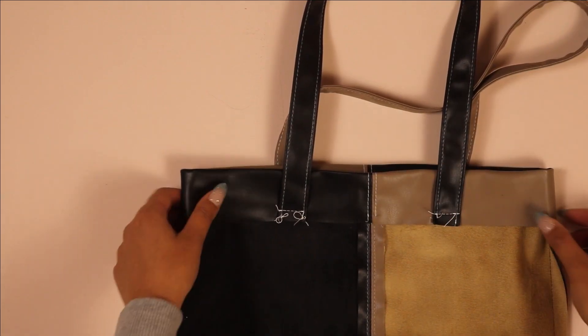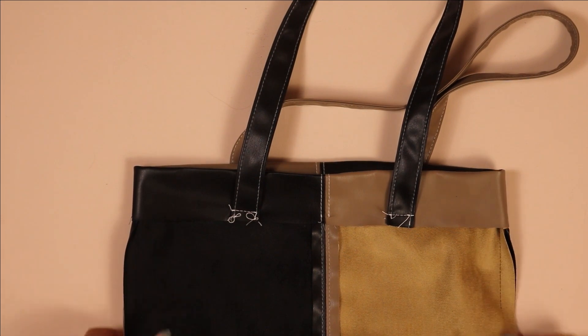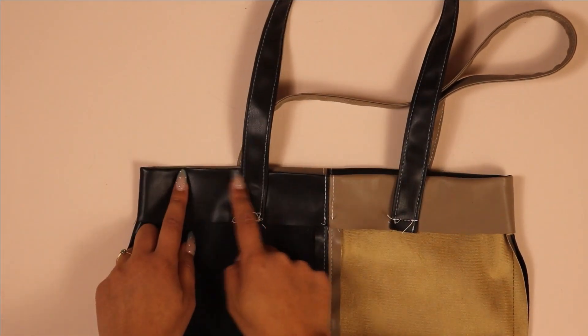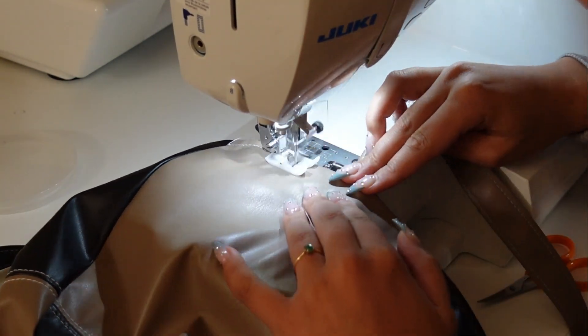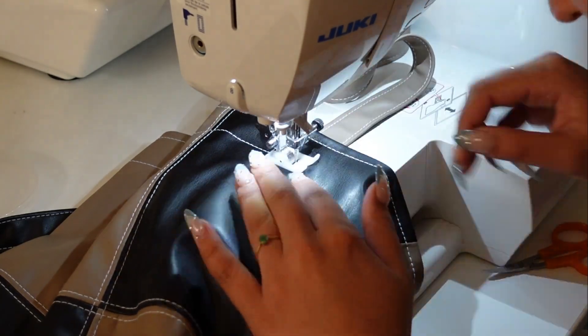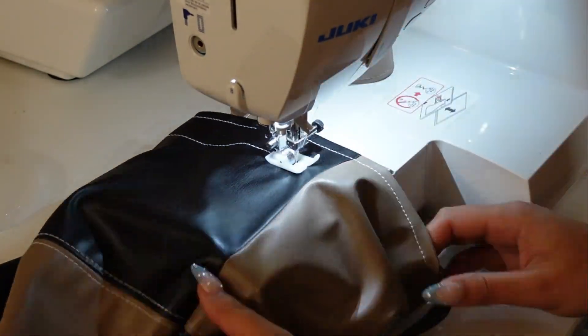Once you do that, you're going to fold that top hem under two inches, and then I'm going to sew around the bag to secure that hem. I'm going to sew about a quarter inch from the top and then also about a quarter inch from the end of that hem. After you hem the top, your tote bag is done.